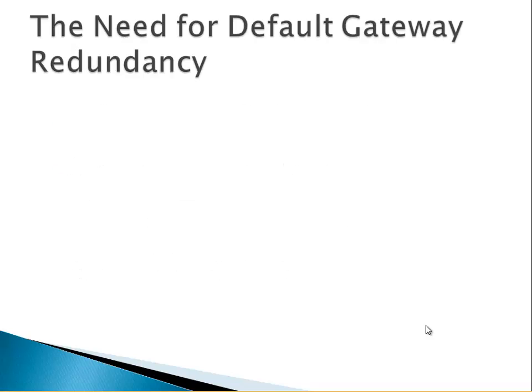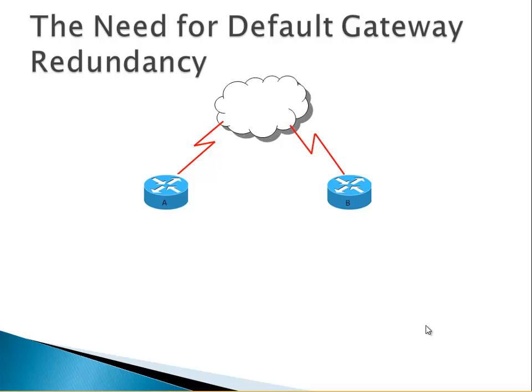The need for default gateway redundancy. Imagine this: we have two routers, Router A and Router B. These two routers have a connection towards the internet (ISP). Router A's IP address is 10.1.1.1, Router B's IP address is 10.1.1.2, and they have a connection on the internal network or LAN.